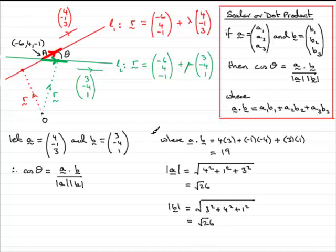So when it comes to cos theta then, all we need to do is just substitute our values in. We've got A dot B as being 19, and then that's divided by the square root of 26 times the square root of 26. Well, root 26 times root 26 is just going to be 26. So there you go.